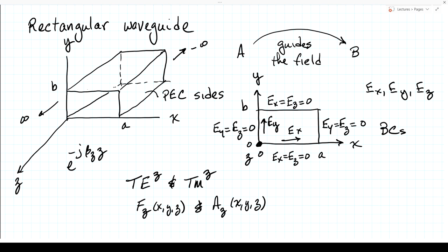One particular mode forms what we call the dominant mode—the mode most useful for getting energy from point A to point B. We'll start off assuming perfect electrically conducting sides, work out all the field components, the Poynting vector, and the total power carried by the waveguide. Then at the end we'll look at the case of a good but not perfect conductor, where we get ohmic losses, using the surface resistance concept developed in a previous lecture.